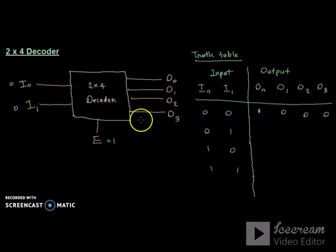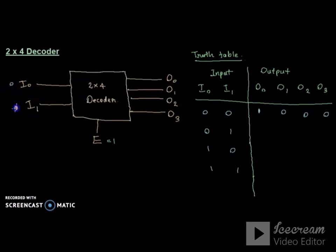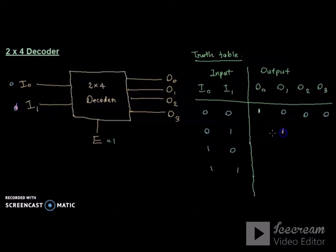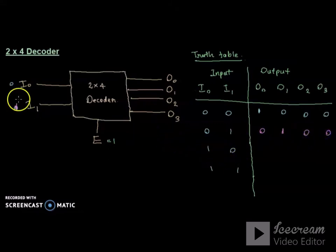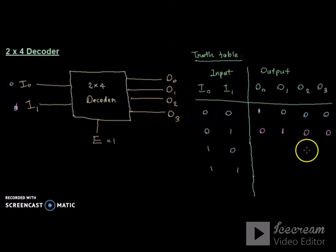When the inputs are 0 and 1 (binary 01), O1 is 1 and the rest of the outputs are 0. When the inputs are 1 and 0 (binary 10), that corresponds to decimal 2, so O2 is 1 and the rest are 0.